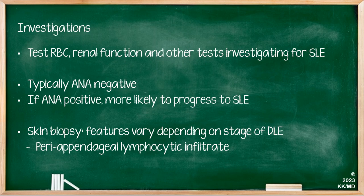In terms of tests, you need to be investigating these individuals as though you're investigating for a systemic lupus picture. So in that respect, you would be testing for blood count and renal function as well as the other serological markers for lupus. However, discoid lupus is typically ANA negative, which is unusual for systemic lupus. And if it is ANA positive, this means that patients are more likely to progress to a systemic form of the disease.